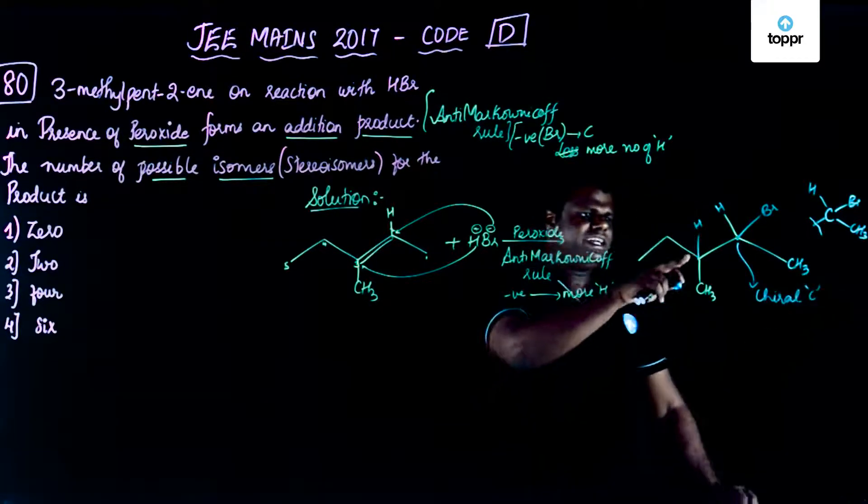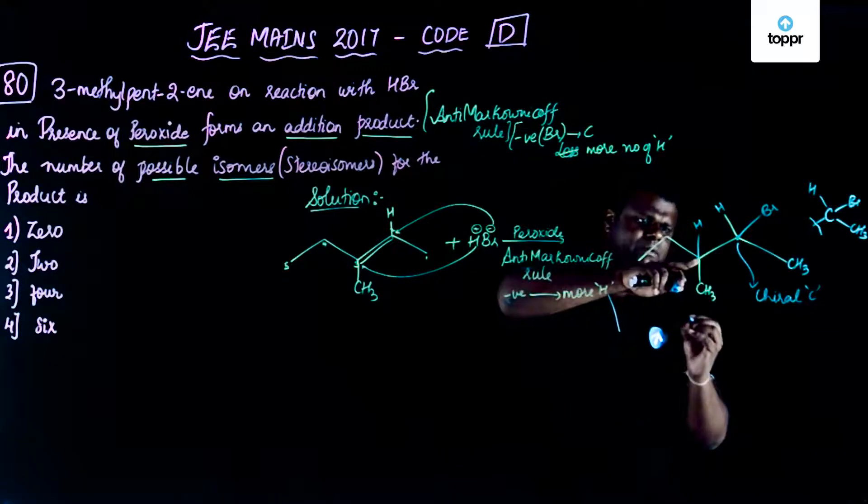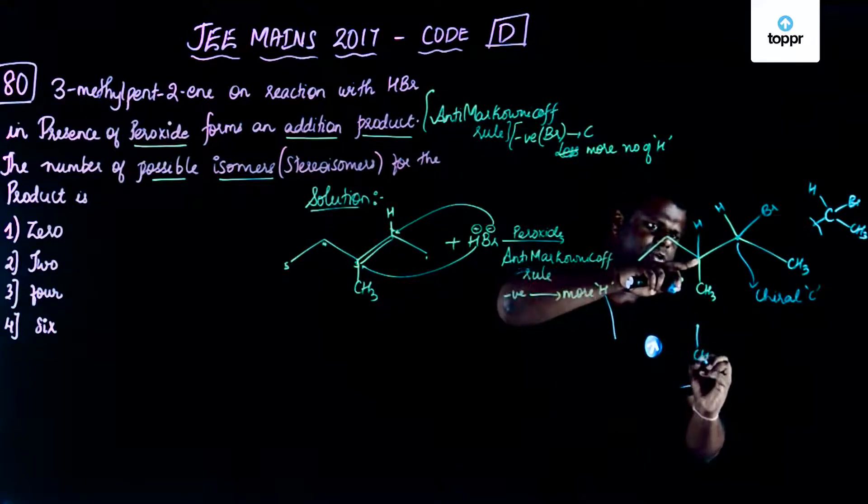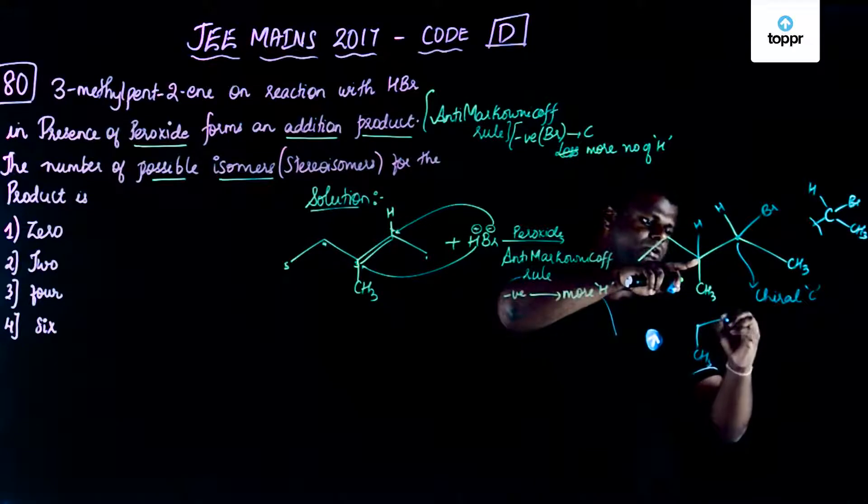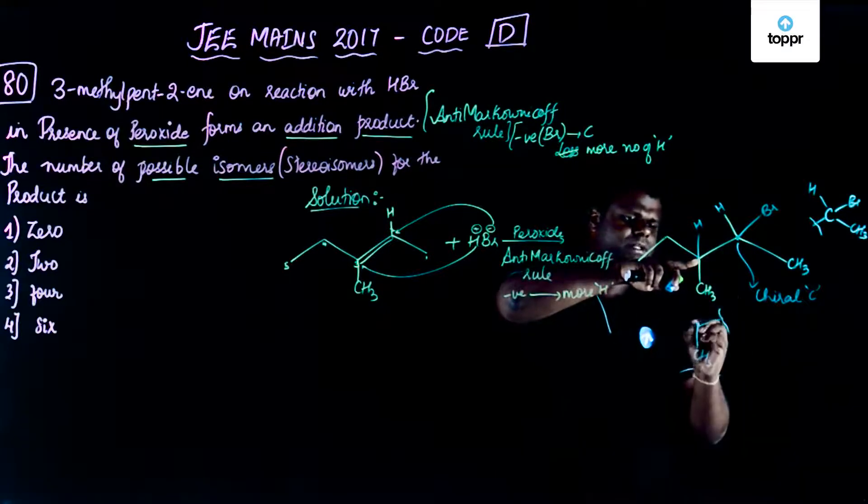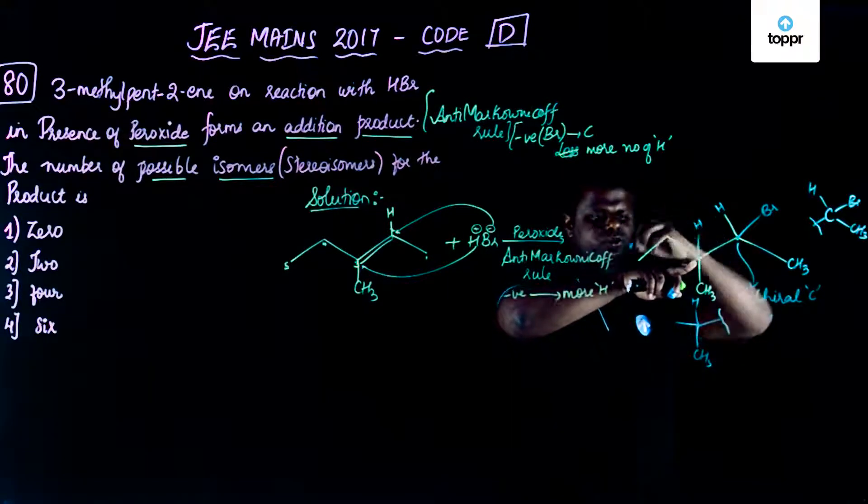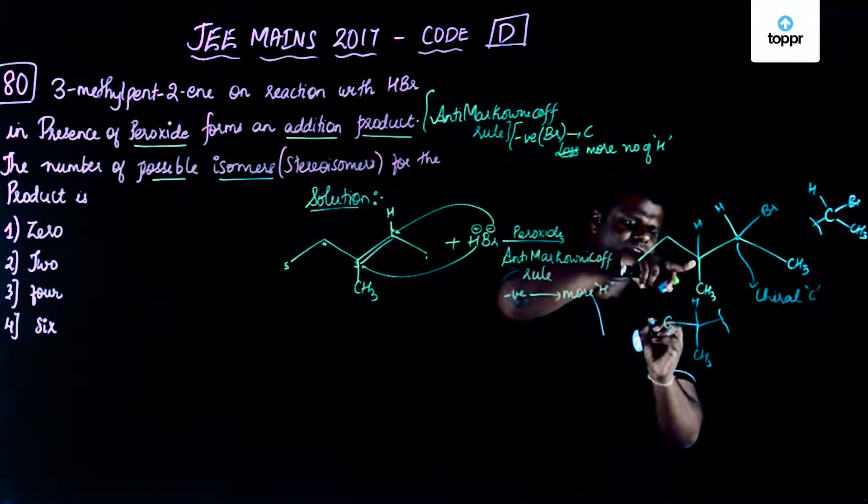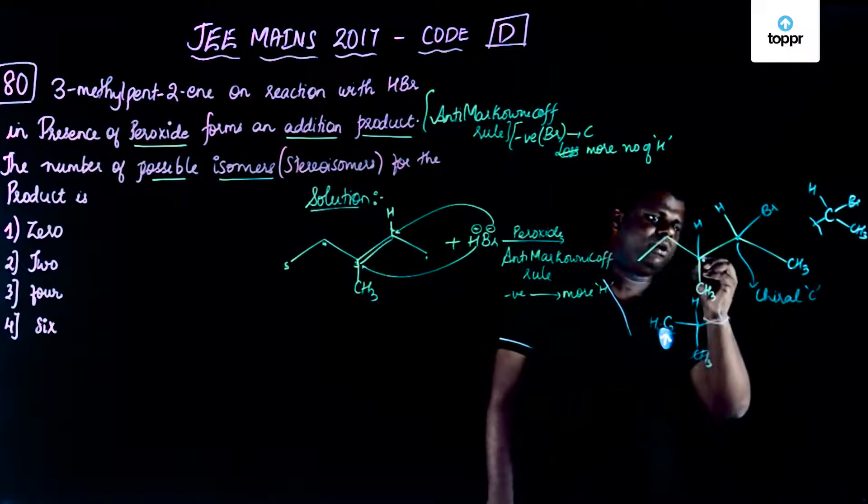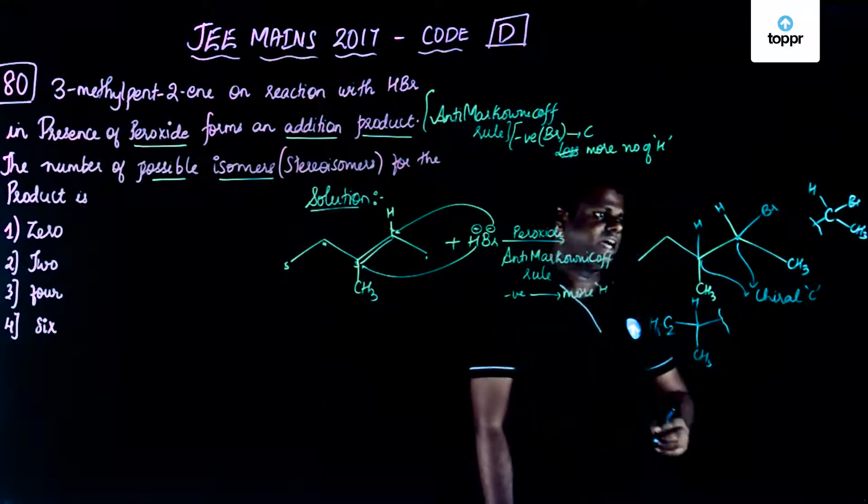Now let's have a look over here. So this carbon is connected to a CH3 group. This carbon is connected to a big group like this. And this carbon is connected to a hydrogen. And this carbon is connected to, so the same carbon anyway, CH2 CH3. So I'll write C2H5. So again if you see here, this is also a chiral center or chiral carbon.